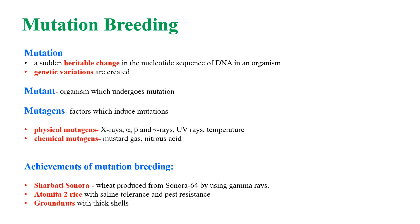Physical mutagens include X-rays, alpha rays, beta rays, gamma rays, UV rays, and temperature. Mustard gas and nitrous acid are examples of chemical mutagens. Examples of mutation breeding include Sherbati Sonora wheat, Atomita rice with saline tolerance and pest resistance, and groundnuts with thick shells.